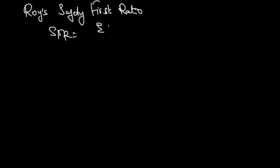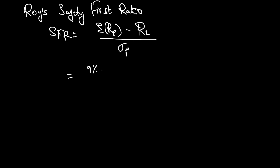Roy's Safety First Ratio is equal to the expected return of the portfolio minus the return of the threshold level, divided by the standard deviation of the portfolio. For example, if the expected return is 9%, the threshold level return is 3%, and the standard deviation of the portfolio is 12%, you will get an output of 0.5.